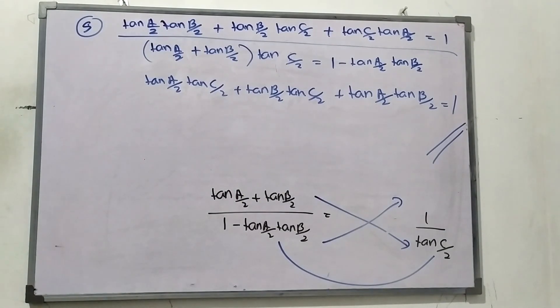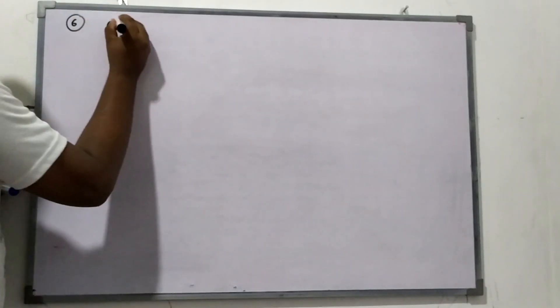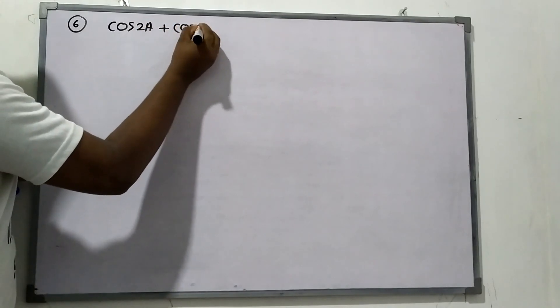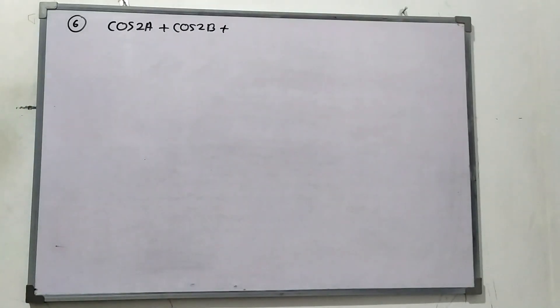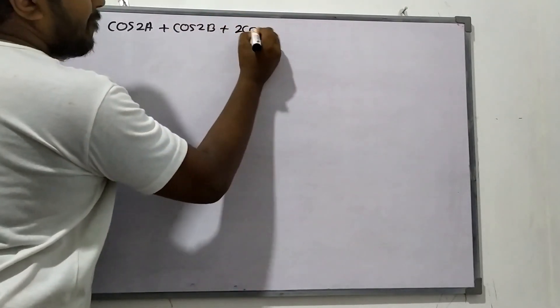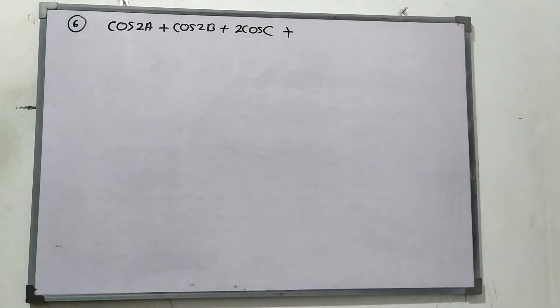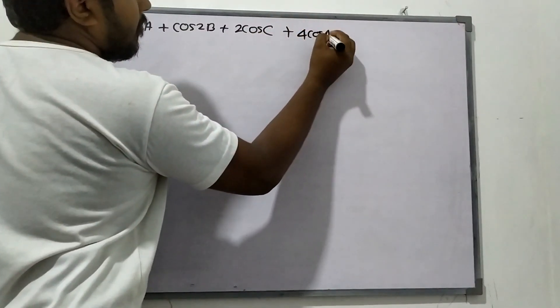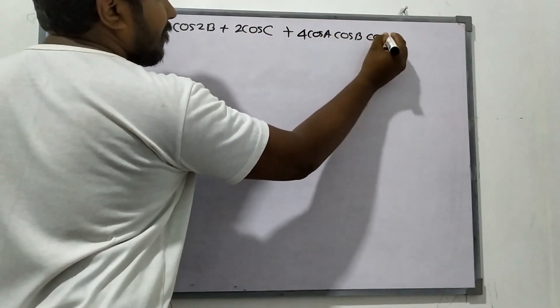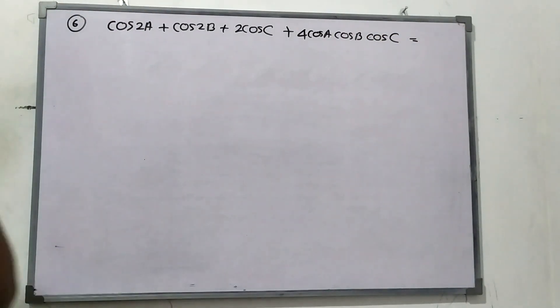Now moving to the next part. We use cos 2A plus cos 2B plus cos 2C and apply the CD formula, which equals minus 1. So I'm going to start the left-hand side with: cos 2A plus cos 2B plus cos 2C, using sum-to-product formulas.